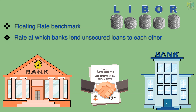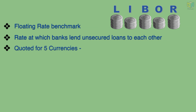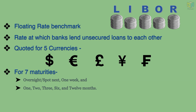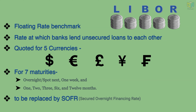LIBOR is commonly used as the benchmark floating rate. LIBOR is the interest rate at which major global banks lend unsecured short-term loans to one another. LIBOR is quoted for five major currencies — the U.S. dollar, the euro, the British pound, the Japanese yen, and the Swiss franc — for seven different maturities. However, LIBOR could soon be replaced by a new alternative reference rate, such as the secured overnight financial rate.